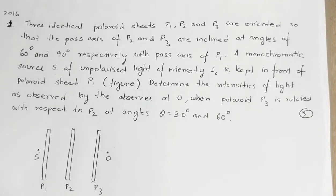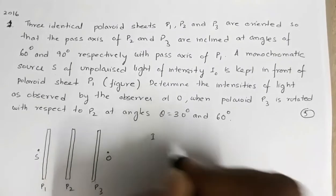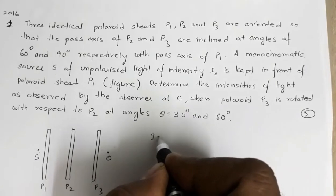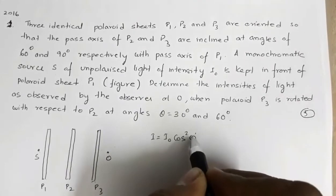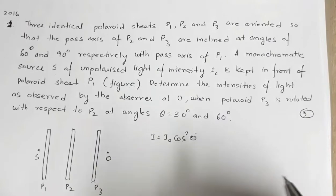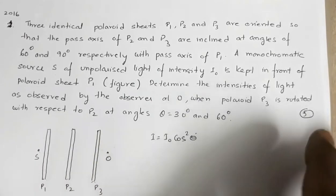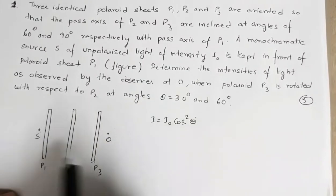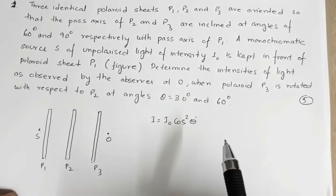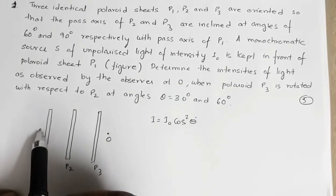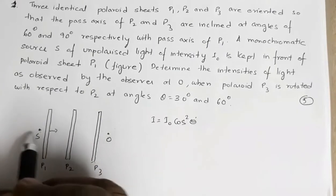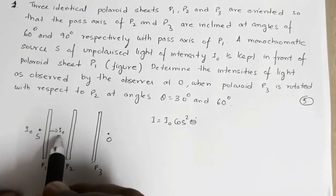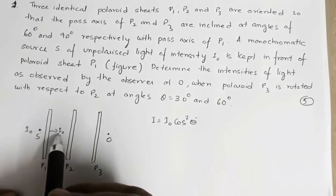To solve this question we use Malus's law, which states that the intensity observed through a polaroid equals the incident intensity i0 multiplied by cos²θ, where θ is the angle between the pass axes of the two polaroids. Also, when unpolarized light is passed through a polaroid, the intensity is halved. So after the first polaroid P1, the intensity becomes i0/2.